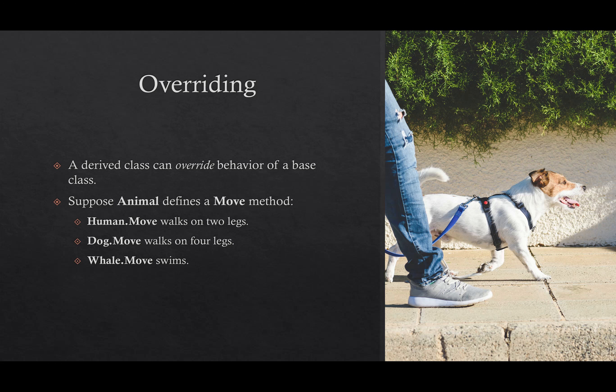So the base class just says it has a move method, and it specifies what parameters and return value the move method has. But the derived classes can provide their own implementations that determine what moving means for that particular class — a human might walk on two legs, whereas a dog walks on four legs, whereas a whale swims.